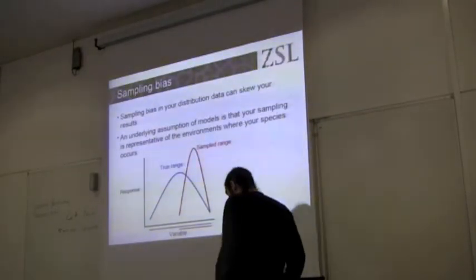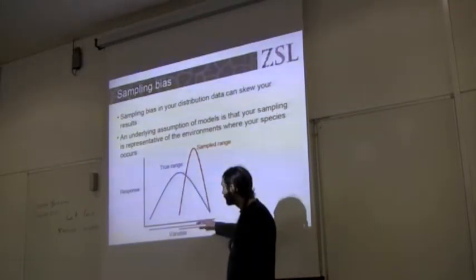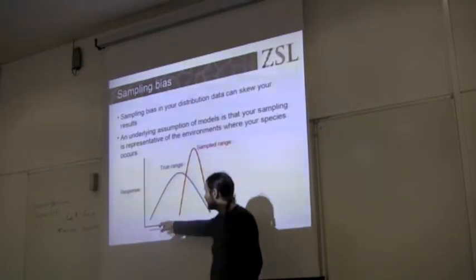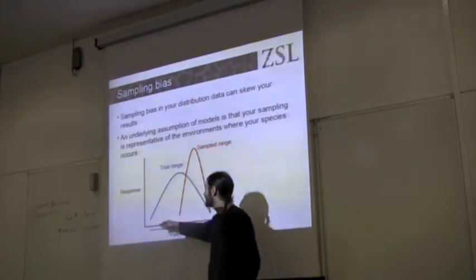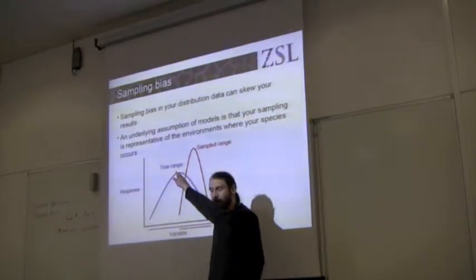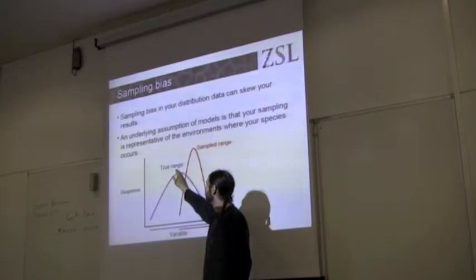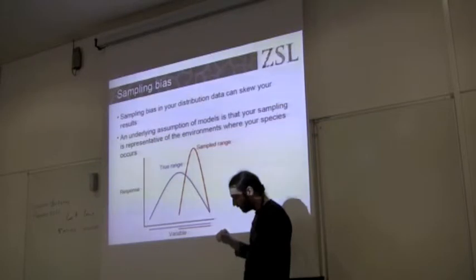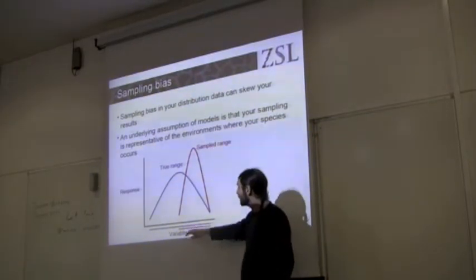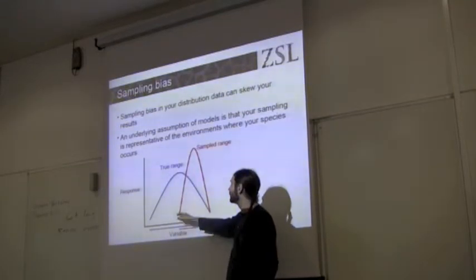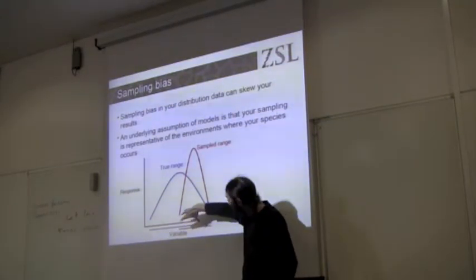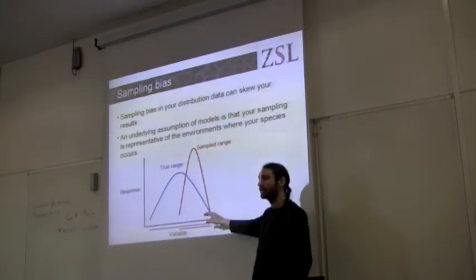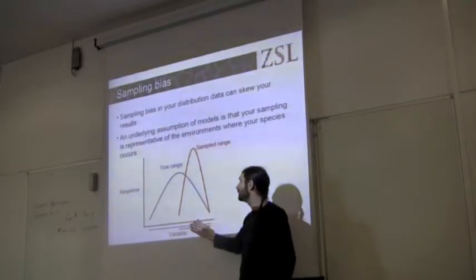So, we were talking about how for our species, for any variable, we've got our ideal response. Say this is temperature range, we've got our minimum thresholds and we've got a sort of ideal temperature range or variable range somewhere in the middle. But if we sample in a biased way, biased within this environmental space, we can end up with an environmental profile that looks very different to what the actual profile is. So the bias, our sampling bias, may give us misleading information about the environmental requirements of our species.